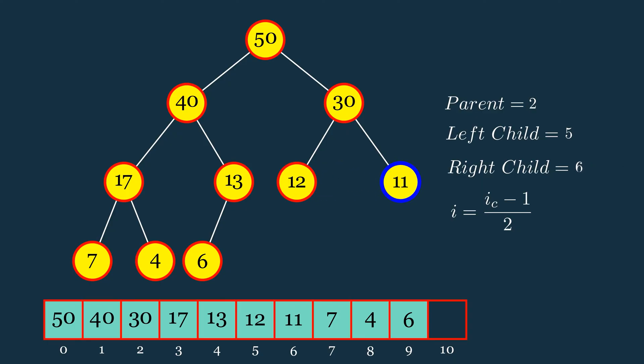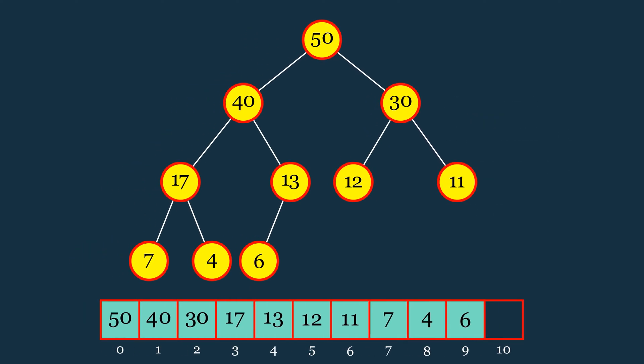Similarly, using the right child formula with i equals 2, we can find the right child's index. To locate the parent of the current node, we use the parent formula with i equals 2 and take the floor of the result to determine its parent index. This simple indexing allows efficient traversal up and down the heap.